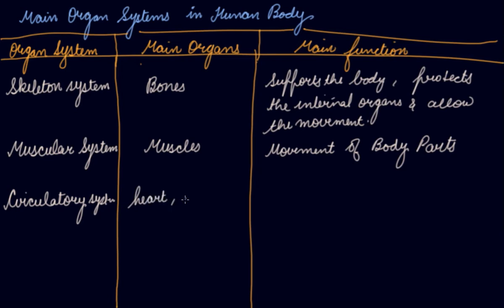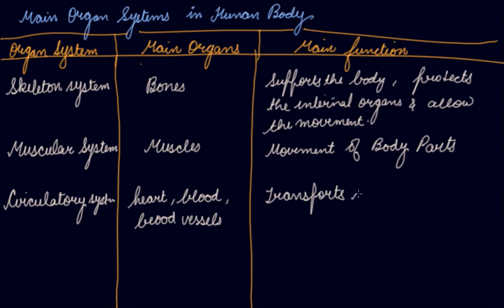The circulatory system includes the heart, blood, and blood vessels. 'Circulatory' means to circulate or to rotate. So the circulatory system transports nutrients and oxygen to all parts of the body.